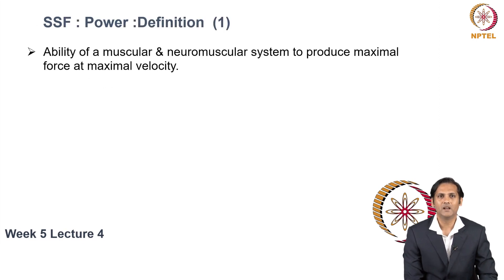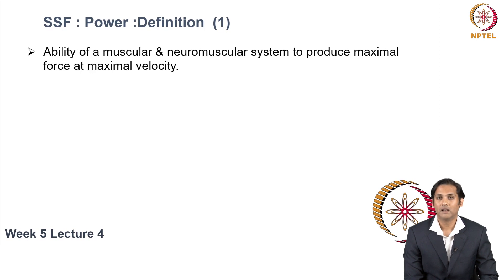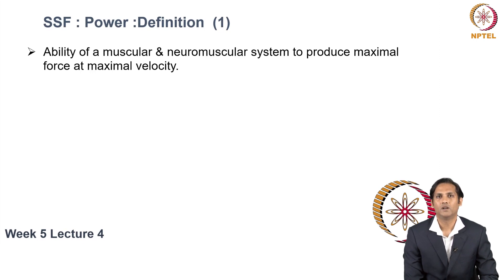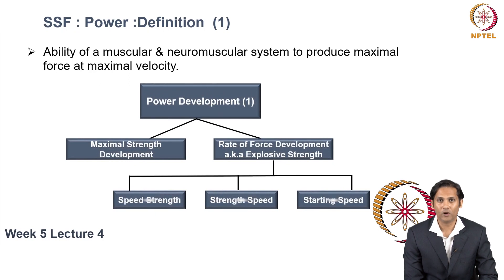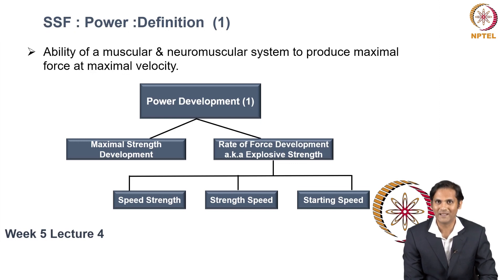Power is the ability of the muscular and neuromuscular system to produce maximal force at maximal velocity. Unlike muscular strength, the aim of power development drills or exercises is to move the load or perform the drill as fast as possible, which is also termed as explosive strength. Overall, power development is divided into developing muscular strength and developing the rate of force development, also known as explosive strength.